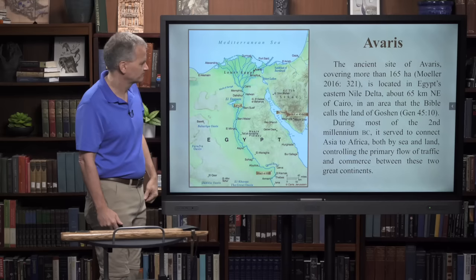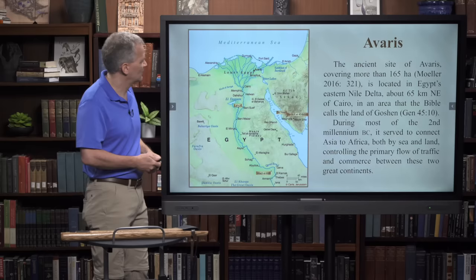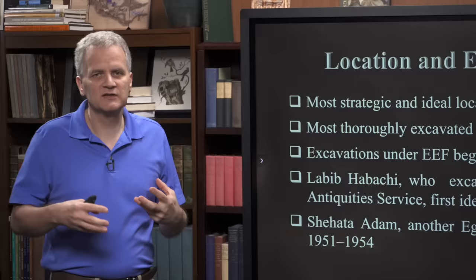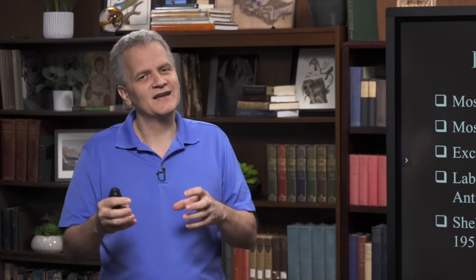This is the site to where Jacob moved his family. We know it in the Bible as Ramses. During most of the second millennium BC, Avaris served to connect Asia and Africa both by sea and land, controlling the primary flow of traffic. All commerce came in and out of the city of Avaris.